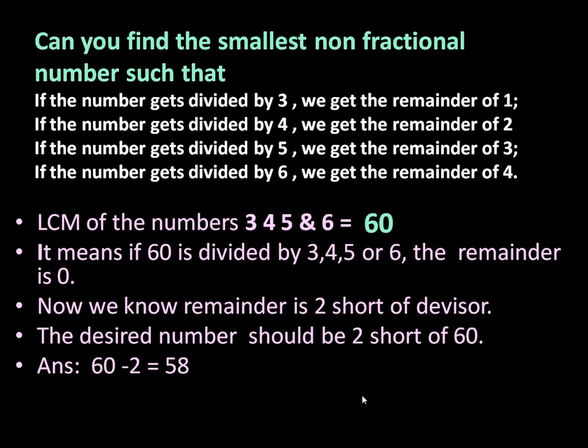So if 58 is divided by 3 we will get remainder 1, if 58 is divided by 4 we will get remainder 2, 58 divided by 5 remainder is 3, 58 divided by 6 remainder will be 4.